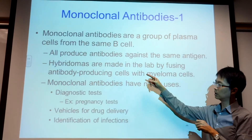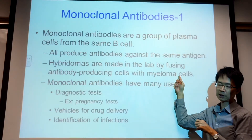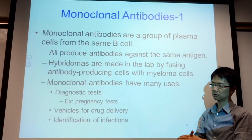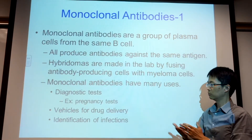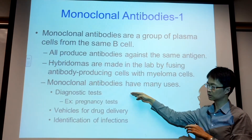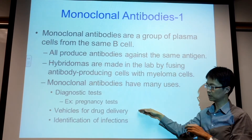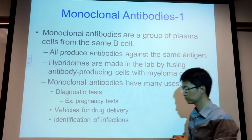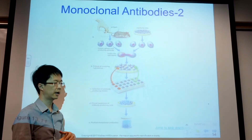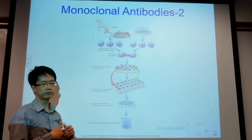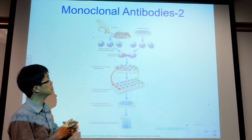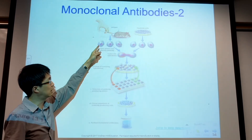By combining the antibody-producing cell with the cancerous plasma cell, the resulting cells will not die and will keep making the antibody you want. These antibodies can be used in many different ways: for diagnosis, drug delivery, or to identify an infection. To make monoclonal antibodies, you inject an antigen into a mouse.